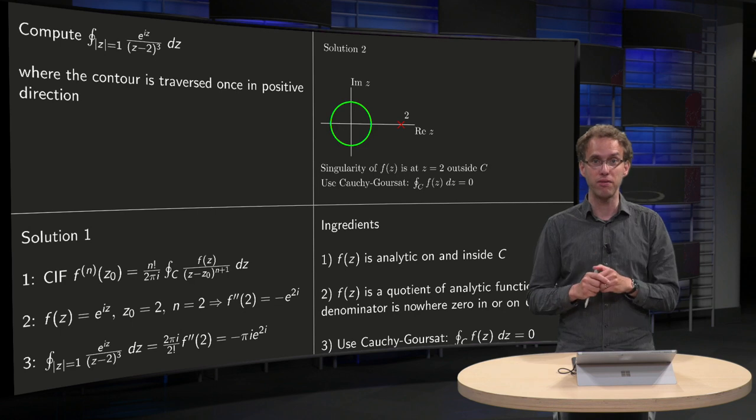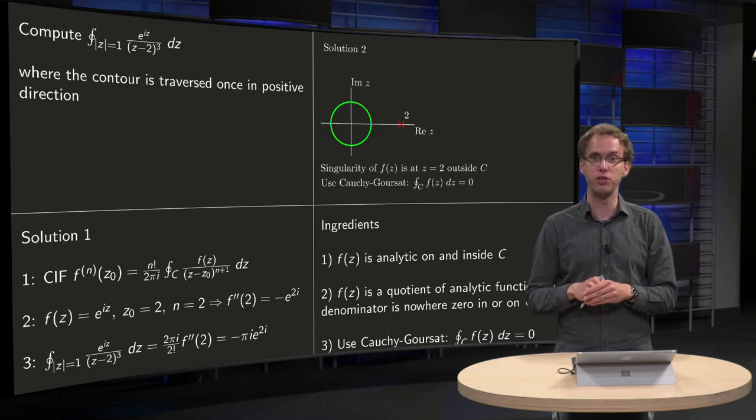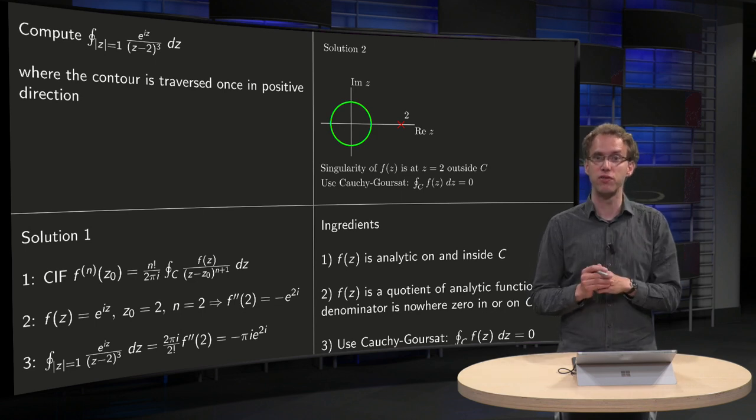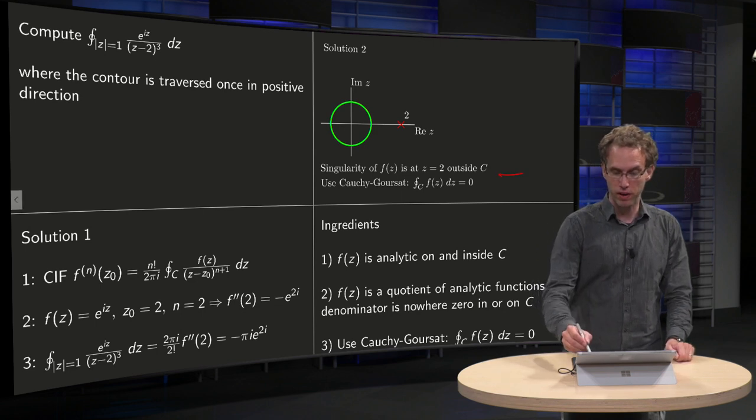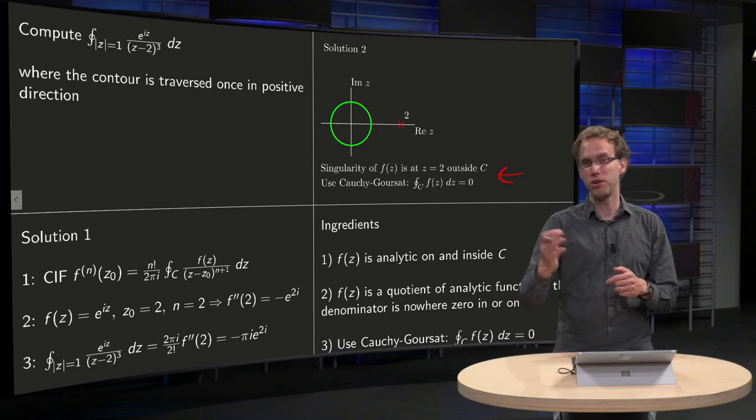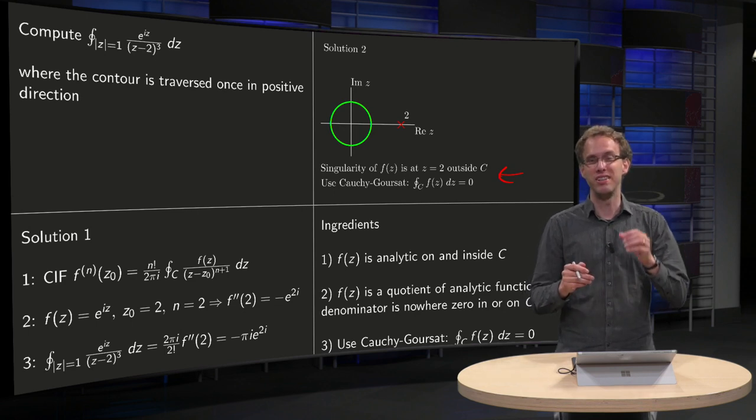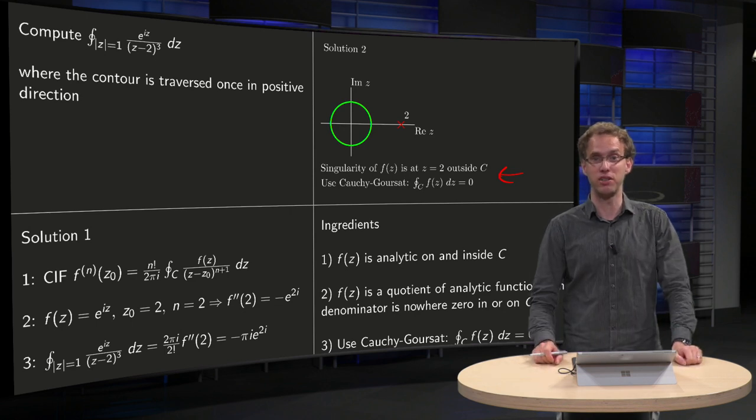So your f(z) is indeed analytic, so then you can use Cauchy-Goursat. Those are the key ingredients for the correct solution. So what's wrong over here? Well, you only say that your singularity is outside of your domain, but what you need is that your function is analytic everywhere inside your domain and on C.